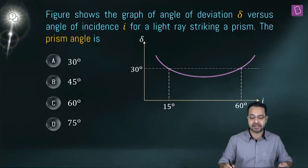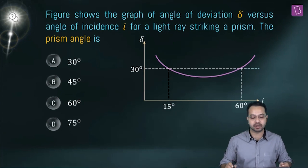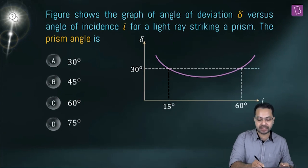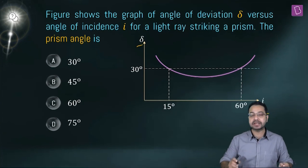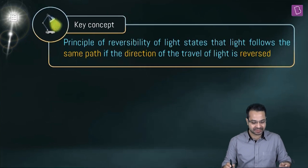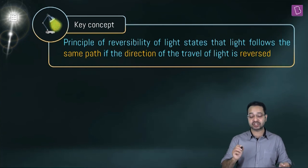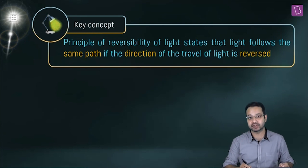The figure shows the graph of angle of deviation δ versus angle of incidence i for light striking a prism. We need to find the prism angle. The key concept here is the principle of reversibility of light: light follows the same path if the direction of travel is reversed.